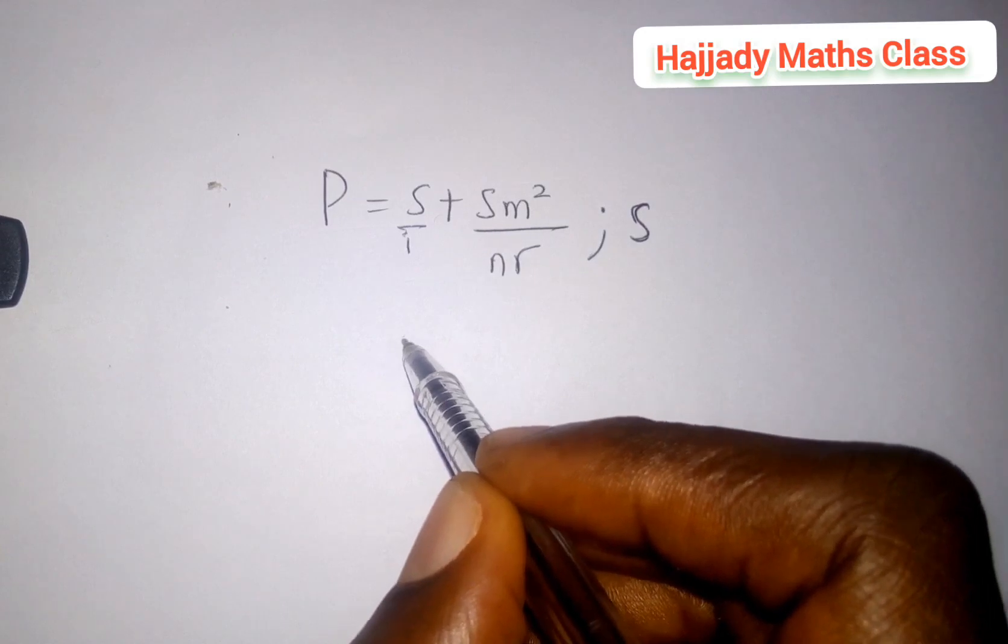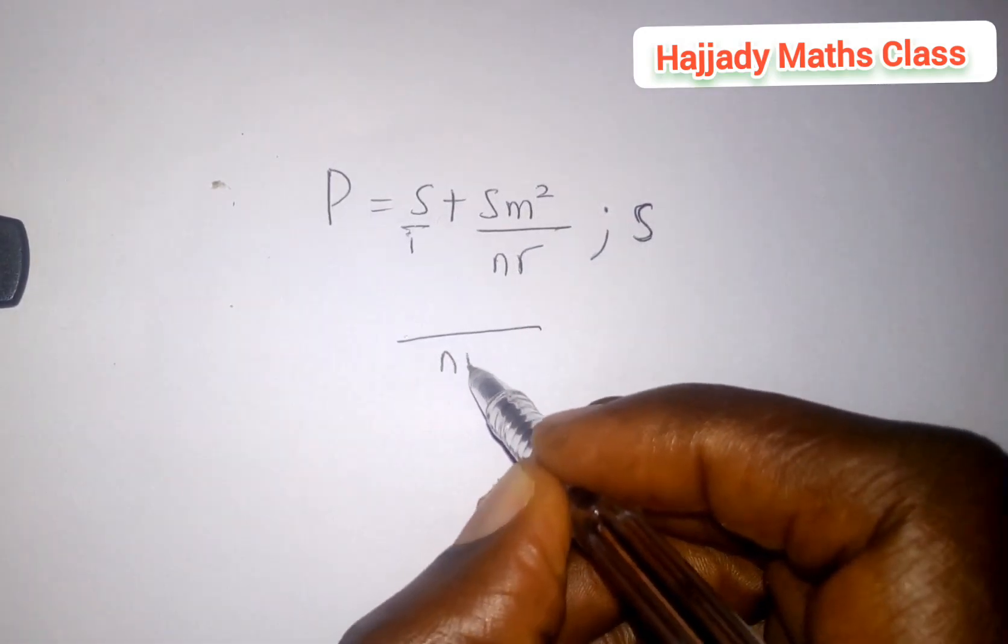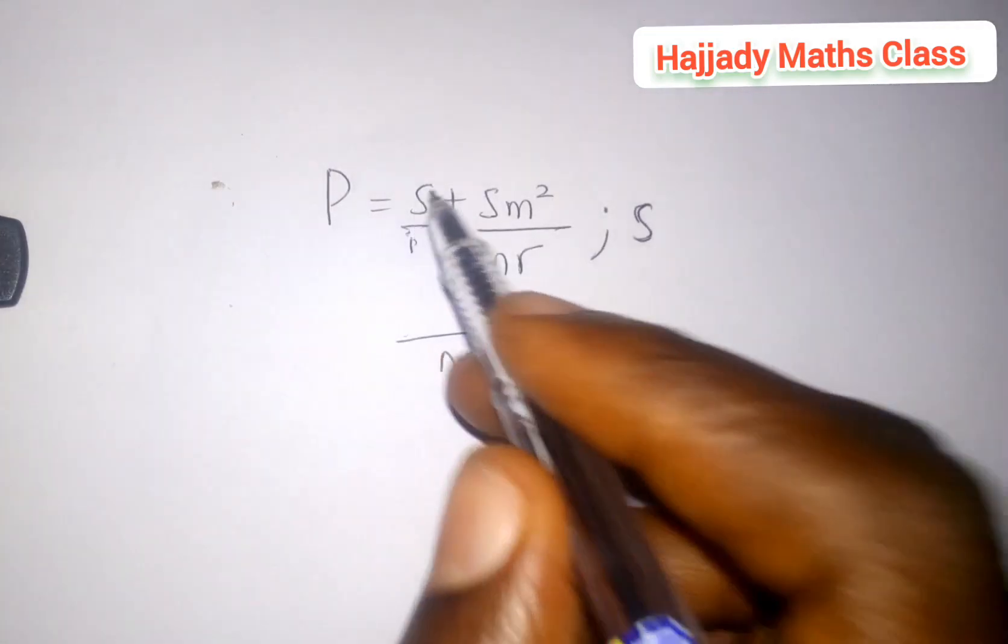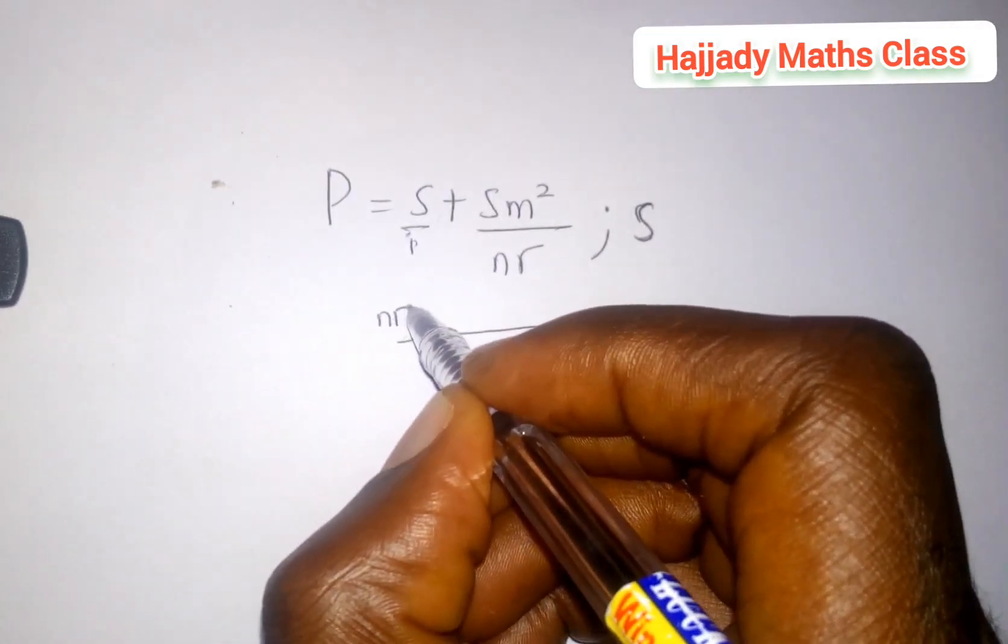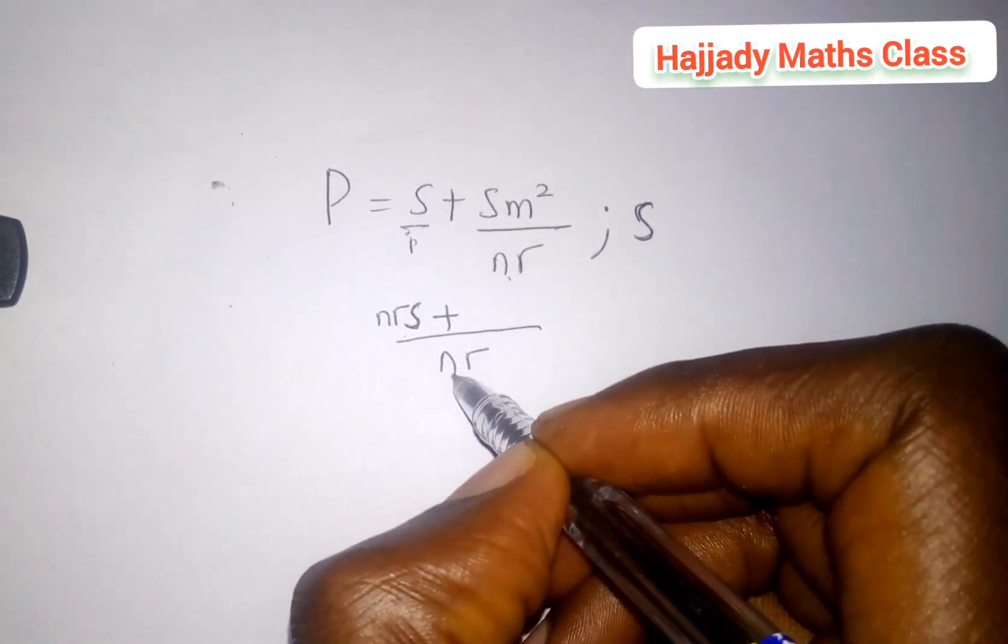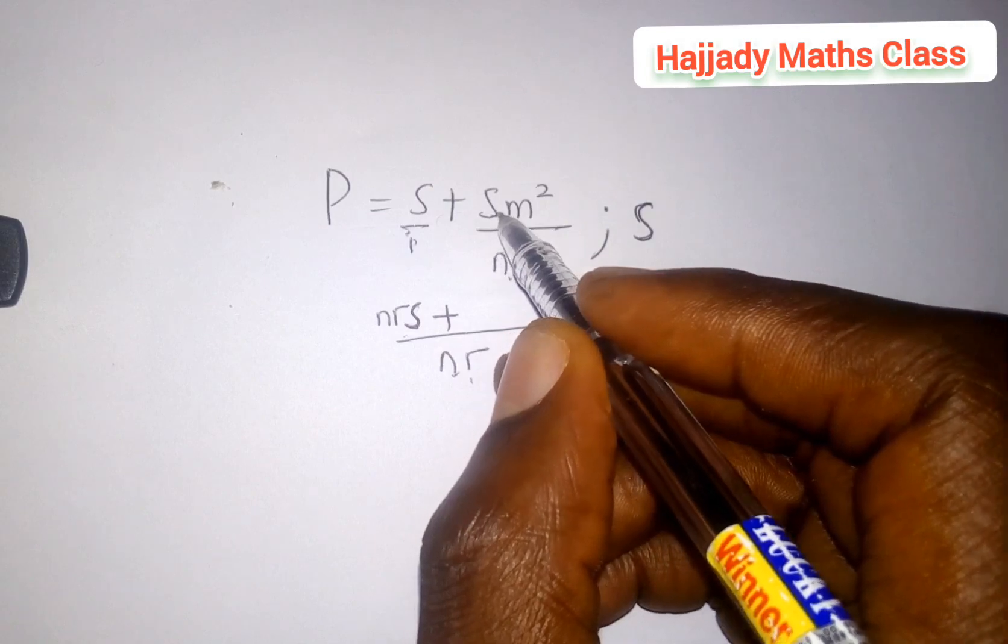Let me just solve directly here and my LCM here will be nr. One times nr is still nr multiply by s, I have nrs. Plus nr times nr is one, multiply by the numerator which is sm square, I have my sm square.